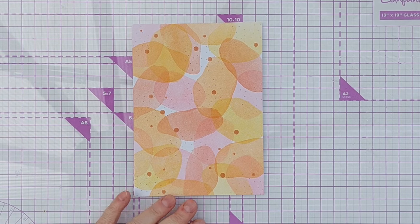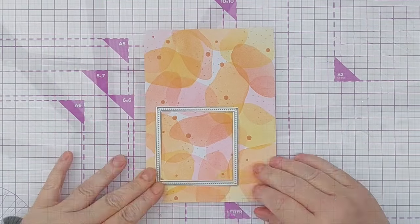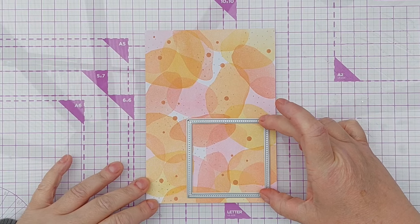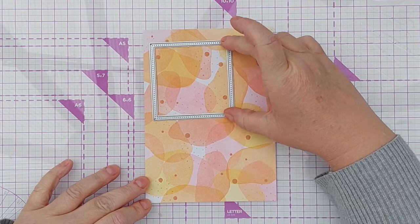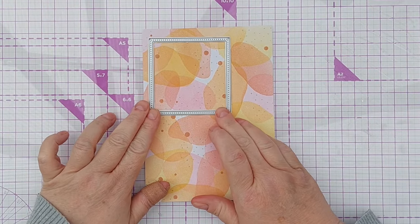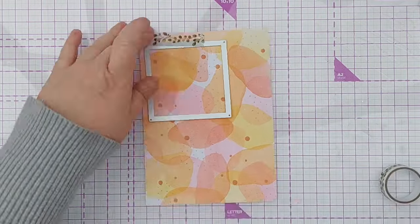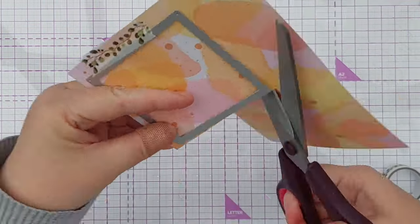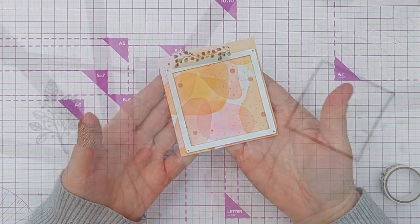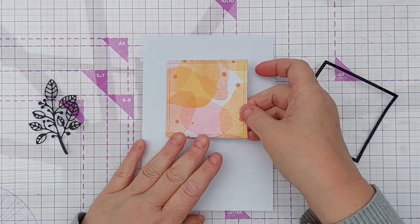So to create my card I'm going to cut a square using this square frame die and I think I'll grab this, it's got a bit of everything, a little bit of white. So I'll just run that through my cuttlebug. So I've cut my square, it's got a frame around the outside.